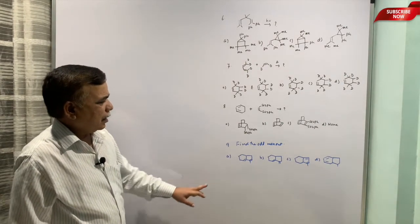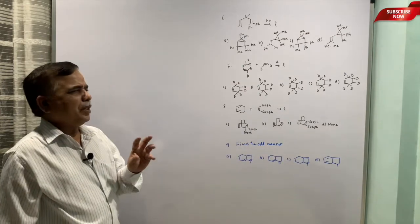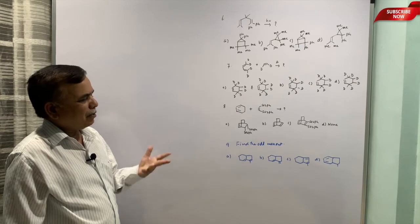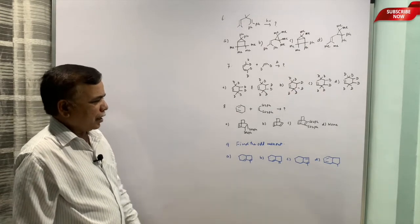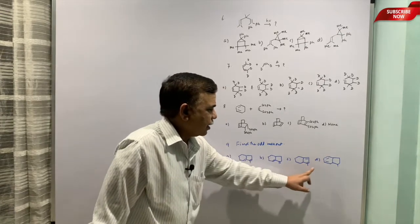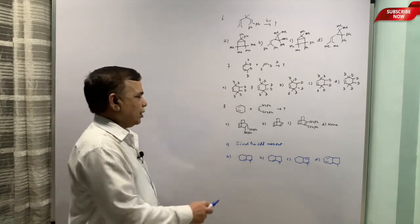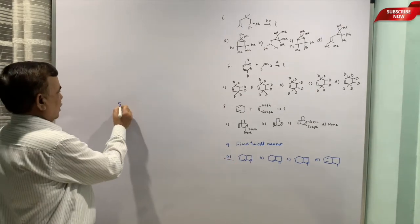Now here we have to find out which olefin is not going to give Diels-Alder adduct because everywhere dienes are there. So it is going to be a common exercise wherein dienes, odd means the diene which will not undergo Diels-Alder. This is s-cis, this is s-cis, this is cis, this is trans.